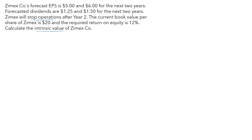Using the residual income model, we will calculate the residual income for each year — year one and year two. We then find the present value of these residual incomes, discount them back to time zero, and add the current book value of $20 to the present value of both residual incomes.